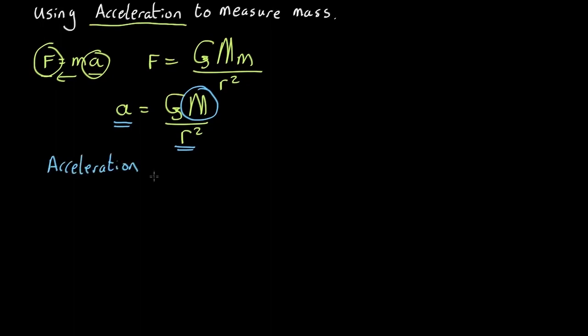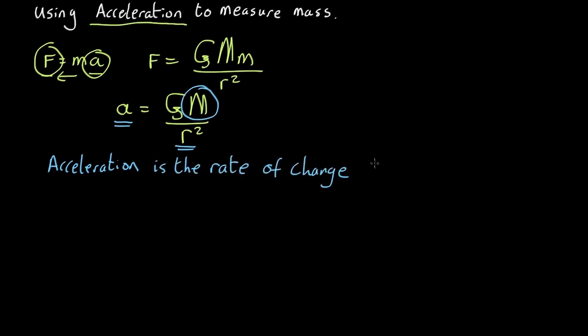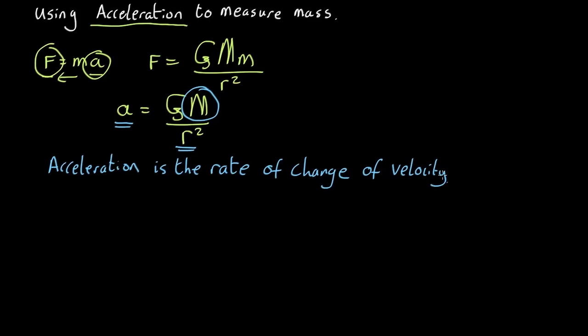Acceleration is the rate of change of velocity. So what that means is whenever we see something with its velocity changing, then there must be an acceleration, and therefore there must be some mass nearby. And if we can see how much the velocity is changing, that will tell us how big the mass is.